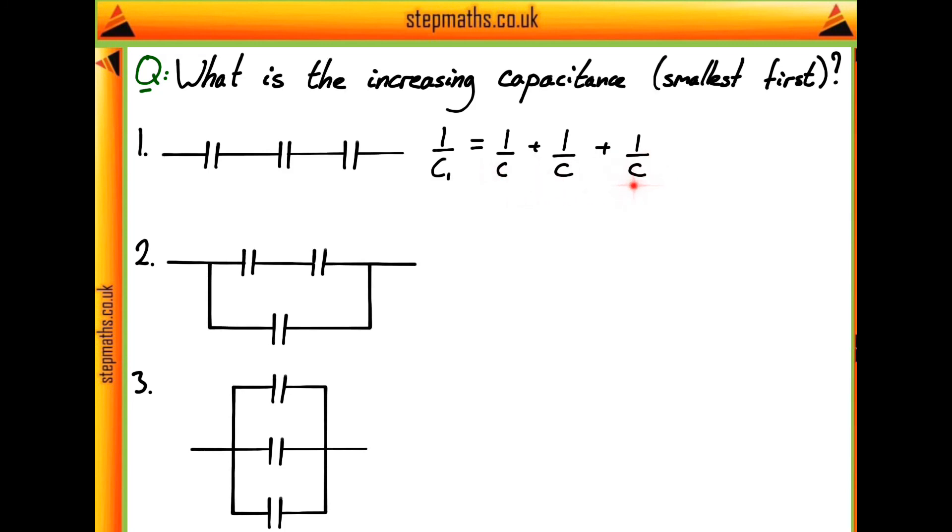In that case, these three add up together to give us three over C. So a total capacitance for configuration one of C over three. OK, so fairly easy.